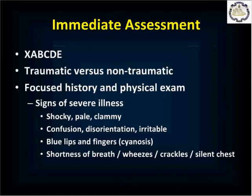In any patient complaining of chest pain or shortness of breath, perform your immediate initial assessment: control exsanguinating bleeding, manage the airway, breathing, circulation, disability or neurologic status, and expose them to look for further disease then protect them from the environment. If they are in cardiac arrest, begin CPR. Determine if the cause is traumatic or a non-traumatic medical event, then do a focused history and physical exam. If the patient is ill-appearing, do this quickly.